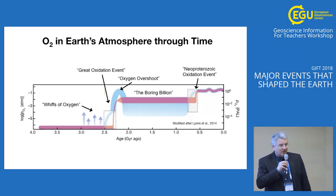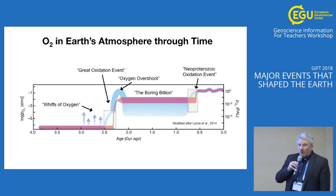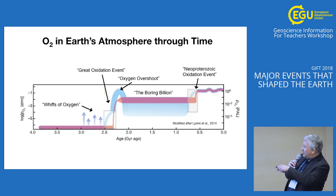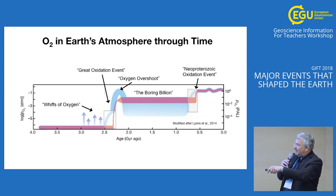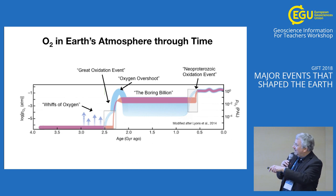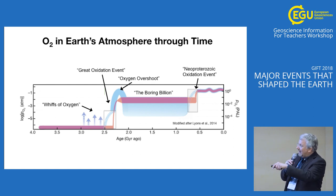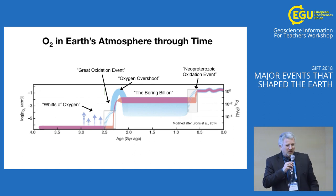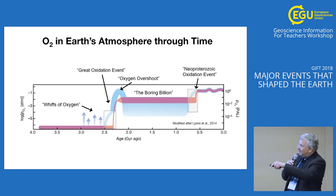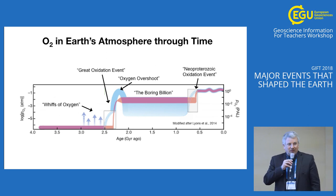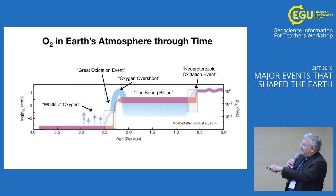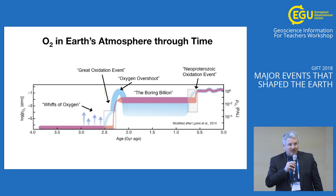What we want to understand is the origin and cause of the great oxidation event. This plot shows oxygen through time — here's four and a half billion years ago, here's today. Here we are today at around 20% oxygen. Here's the first half of history with very little or no oxygen. Then there's this sharp change that happens around 2.3 billion years ago. Roughly halfway through Earth history, we have this sharp increase that we refer to as the great oxidation event.